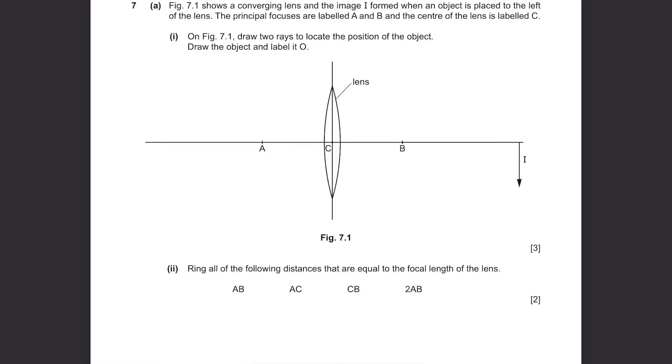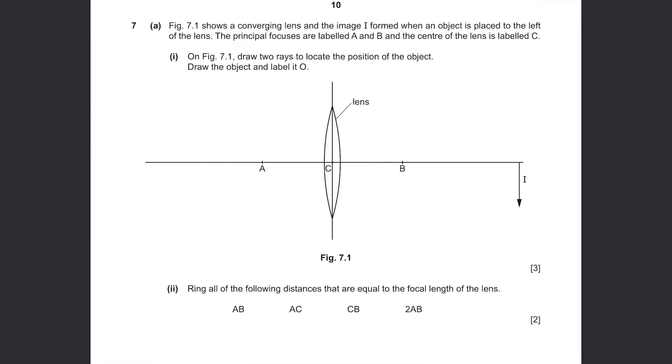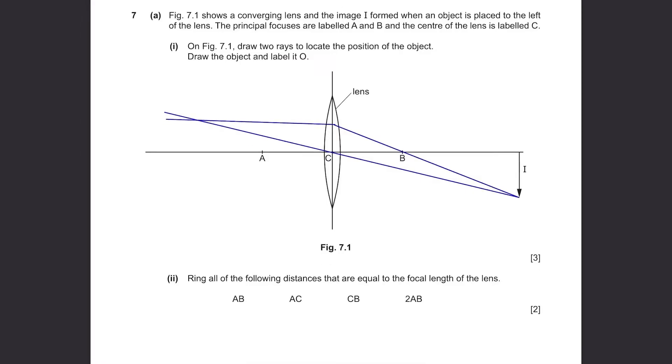Question 7, Part A. Figure 7.1 shows a converging lens and the image I formed when an object is placed to the left of the lens. The principal focuses are labelled A and B and the centre of the lens is labelled C. On Figure 7.1, draw two rays to locate the position of the object. Draw the object and label it O. First draw a straight line that connects this part of the arrow, the centre point, towards this side of the diagram. Then draw another straight line from the tip of the arrow that passes through B, the focal point, through this lens, then a horizontal line to the left side. The rays are done and the intersection is where the object is. Ring all of the following distances that are equal to the focal length of the lens. These are the focal lengths, the distance between the lens and the principal focus. So the answers are AC and CB.